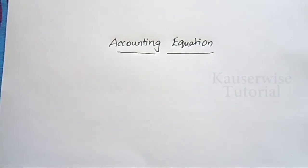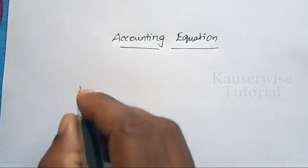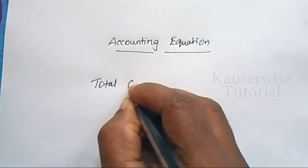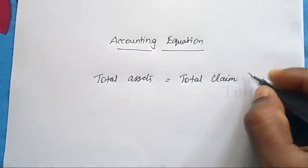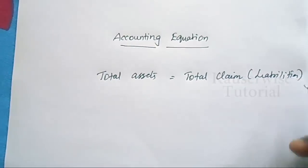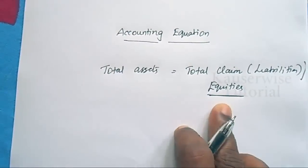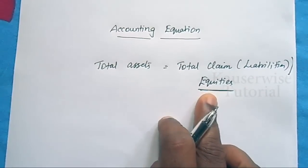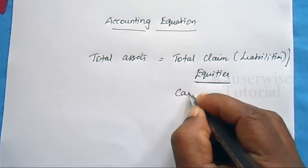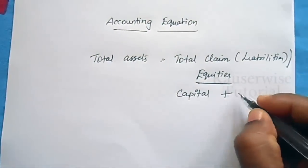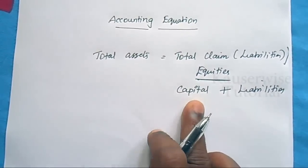The two sides are the asset side and the claims on asset side. Claims on asset means liabilities. Always, total assets is equal to total claim. Total claim means liabilities, or else it is called equity. The term equity refers to two things: internal equity and external equity. Internal equity means proprietor equity, that is capital. External equity is called liabilities.